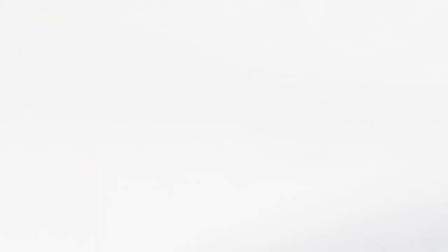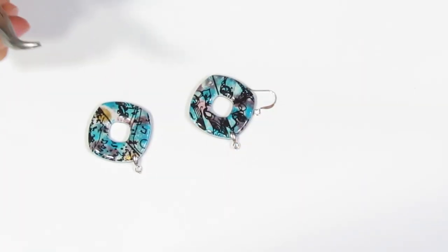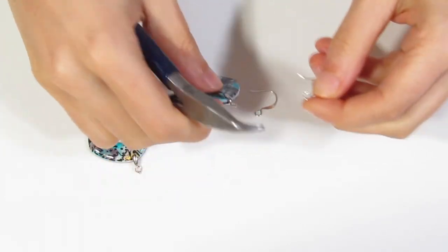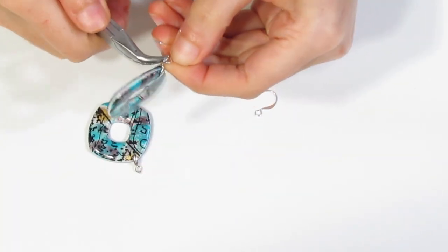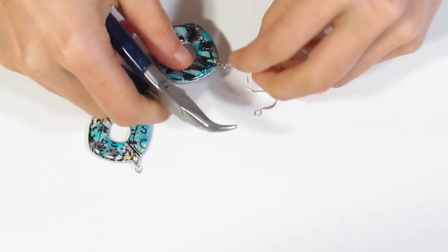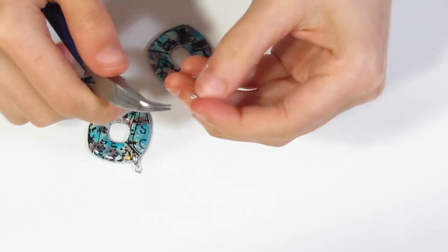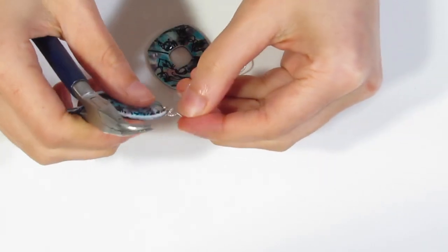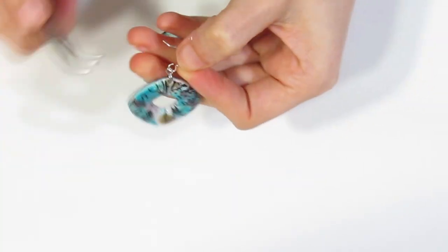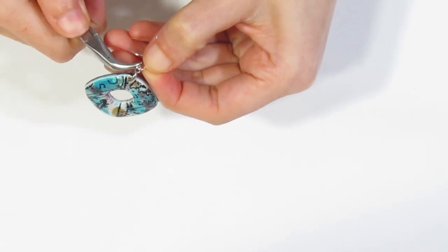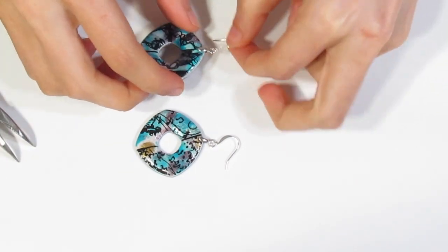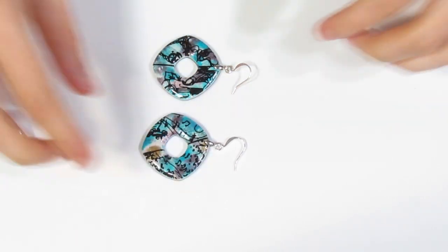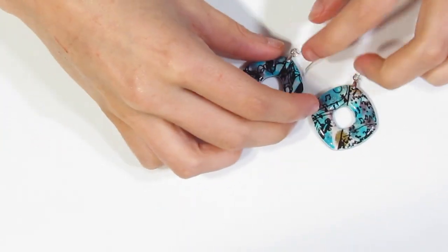Now I'm just going to finish with the earrings. All we need to do is just open that up and attach. And of course close. And repeat with the other one. And there we go. So that's basically it. Very simple. Very easy. So I'll just bring over the other piece now.